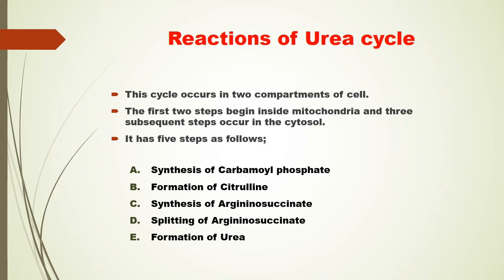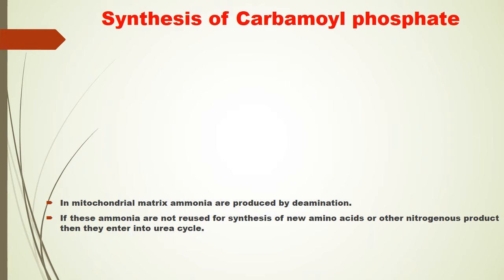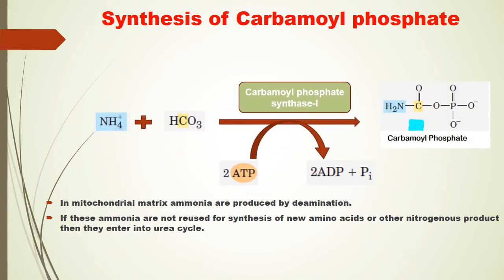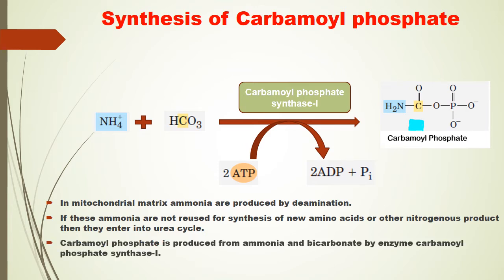Synthesis of carbamoyl phosphate. In the mitochondrial matrix, ammonia is produced by deamination. If this ammonia is not reused for synthesis of new amino acids or other nitrogenous products, then it enters into the urea cycle. Carbamoyl phosphate is produced from ammonia and bicarbonate. This reaction is catalyzed by carbamoyl phosphate synthase-1. During this reaction, two molecules of ATP are utilized.